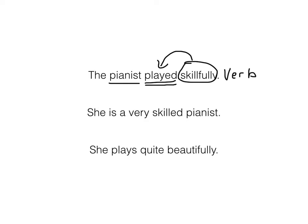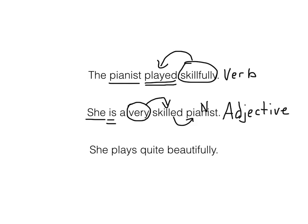In the second sentence, we have 'she is a very skilled pianist.' She is the subject; is is the verb. And then we have the word very — that's our adverb here. It's telling how skilled she is: very skilled. But skilled is describing pianist, which is a noun, which makes skilled an adjective. So here, the adverb is describing an adjective.